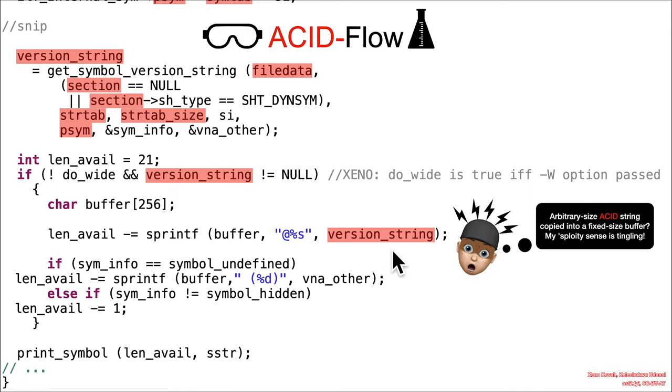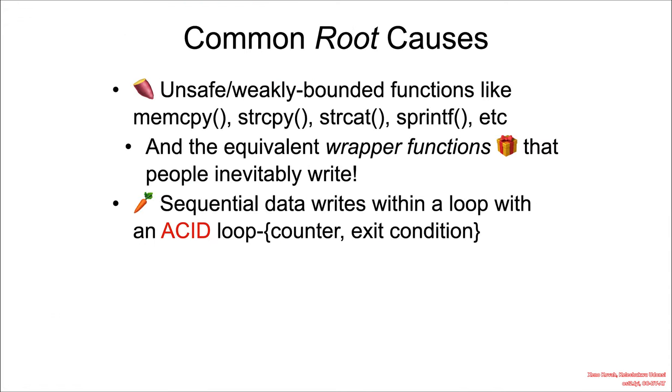So if an attacker could pass a version string that is larger than 256 bytes, then this will go ahead and overflow the buffer due to the sprintf. So if we go back and we look at our common root causes, right, amongst the things in the sweet potato case was sprintf, one of those weakly bounded functions.